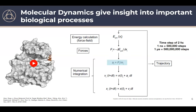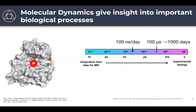The time steps we take must be very small — often around two femtoseconds. So to simulate just one nanosecond of a biological system we need 500,000 steps; one microsecond requires 500 million steps. This is a very expensive technique. We're typically interested in binding events that take place on the microsecond-to-millisecond timescale, but what we can actually calculate is only about 100 nanoseconds per day.